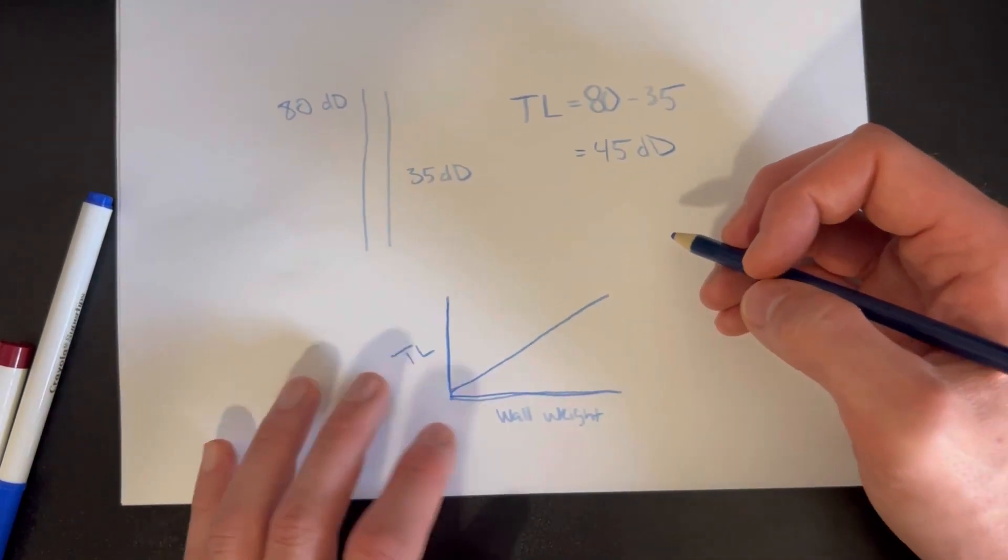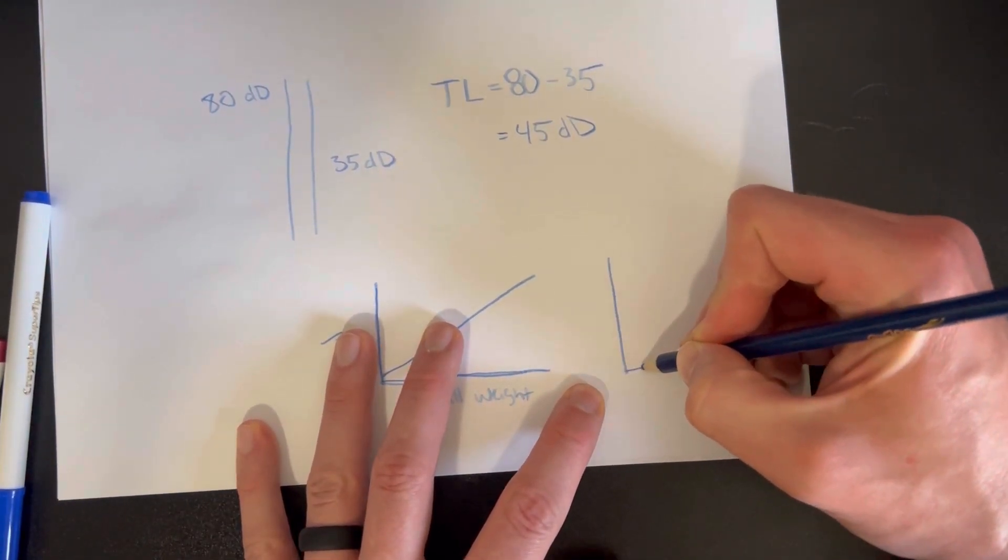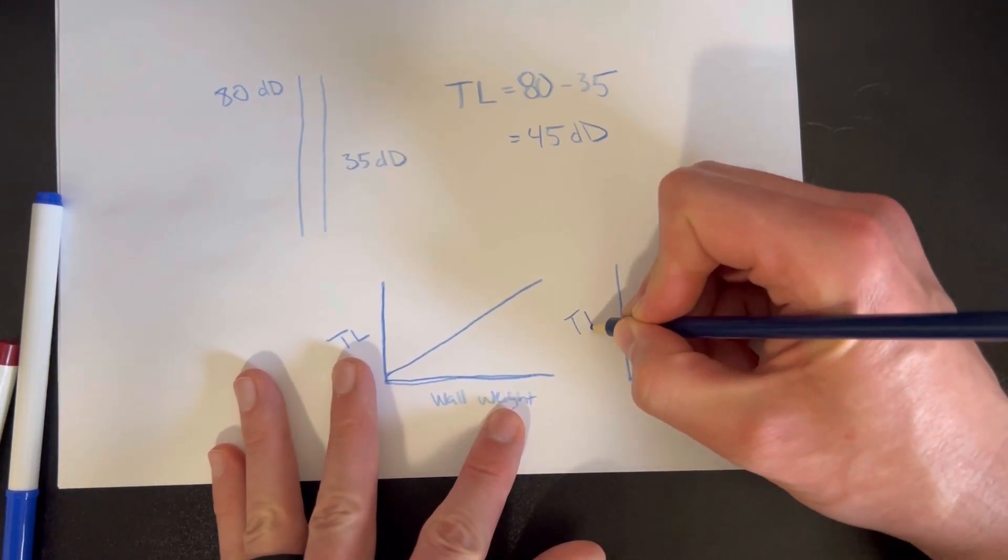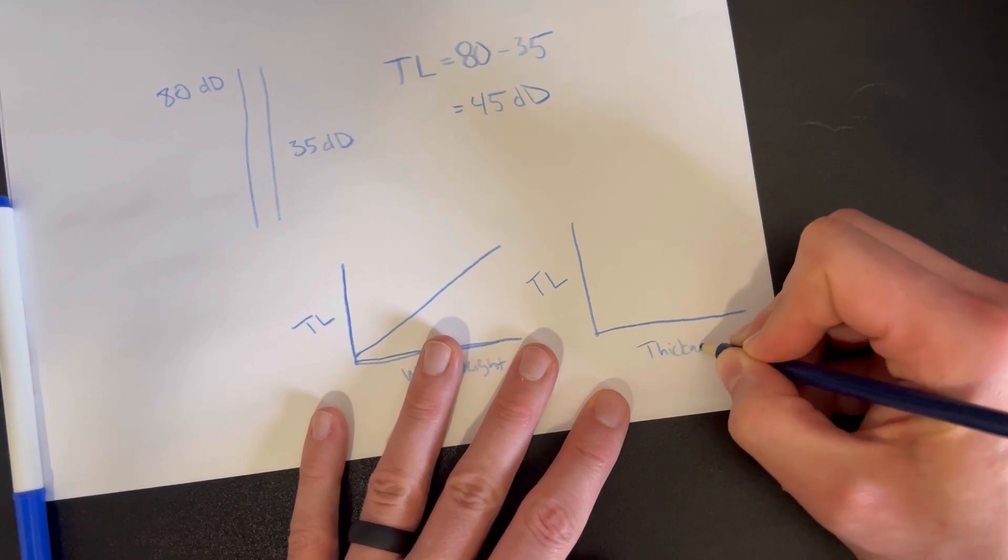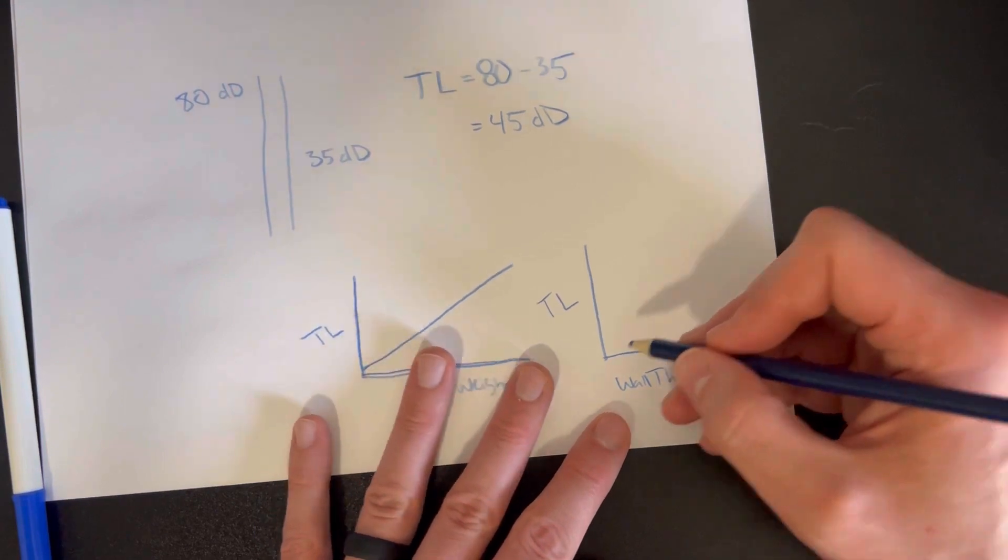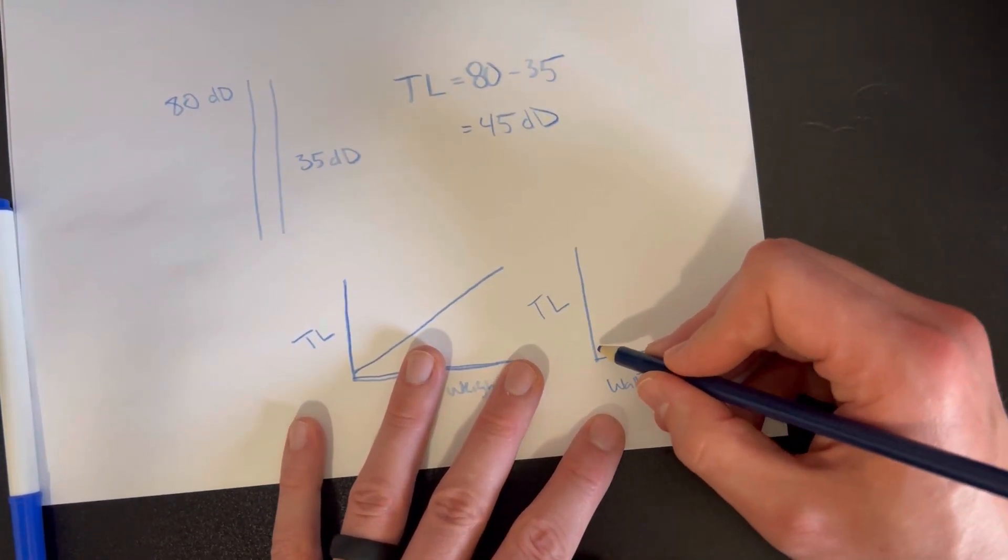And then also we have another graph - TL over here and wall thickness. The thicker the wall, the higher the transmission loss is going to be.